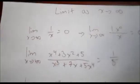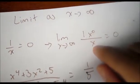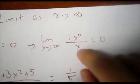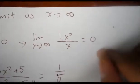Limit as x approaches infinity — these are three basic rules. When the numerator has a variable with a power less than the power of the variable in the denominator, the limit as x approaches infinity will equal 0. For example, 1 over x equals 0 because the numerator is to the power of 0 while the denominator is to the power of 1.